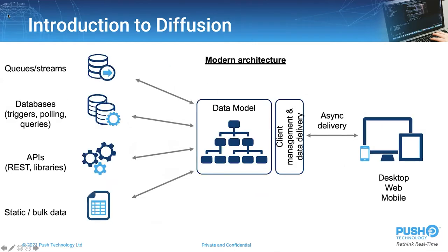With a modern architecture, data is held centrally in a data model, and a single resilient platform on the edge is responsible for client management and secure, efficient data delivery. I'm sure we can all agree that this is a much neater, simpler, and therefore more secure architecture.